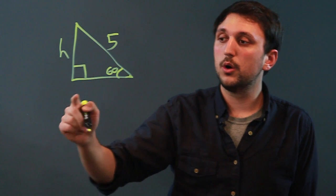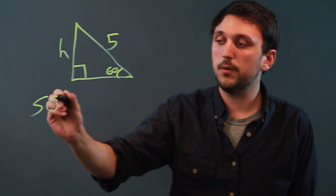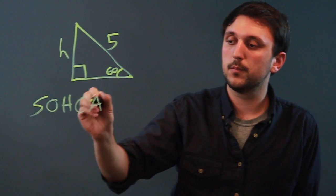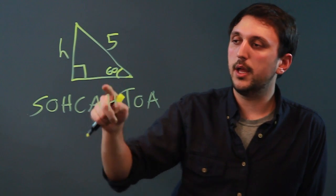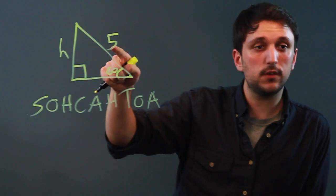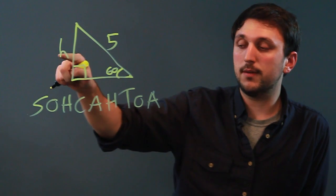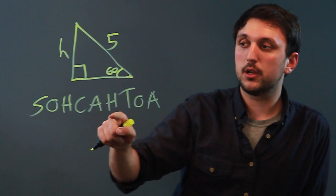So we say SOHCAHTOA, and we have the adjacent to the angle and we have the hypotenuse, and that would be cosine.